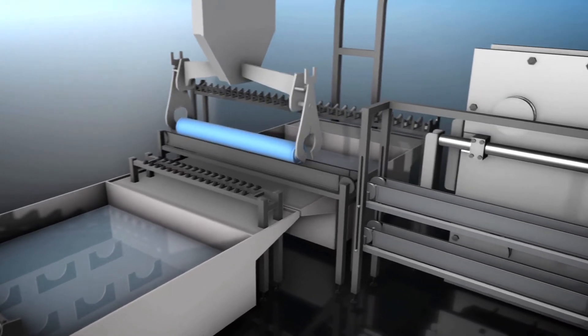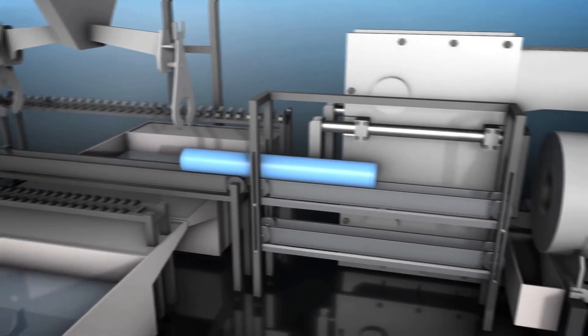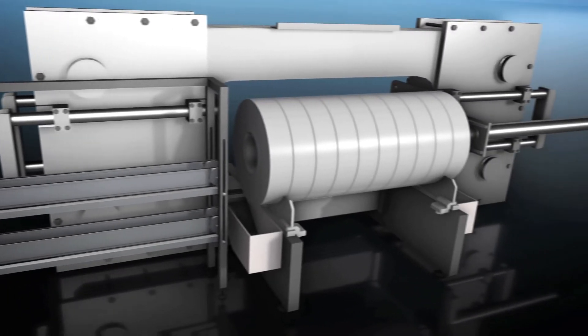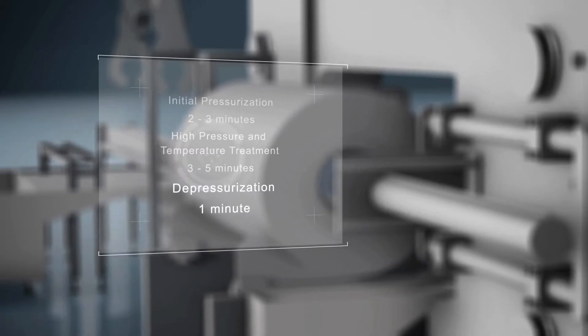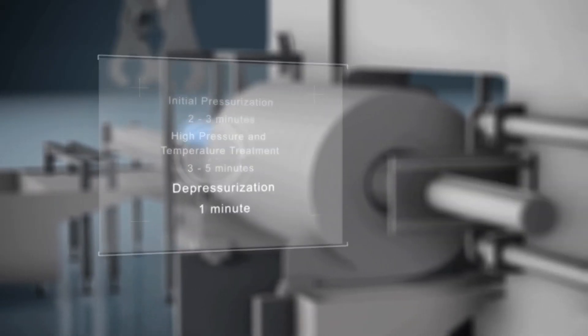In the next step, the preheated food is subjected to an enormously high pressure of up to 6,000 bar. This pressurization lasts just a few minutes and results in an instantaneous increase of temperature up to 120 degrees, enough to destroy the most resistant microorganisms and enzymes.